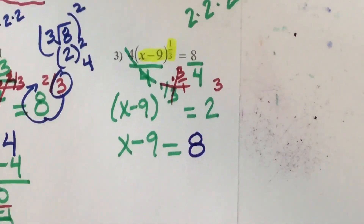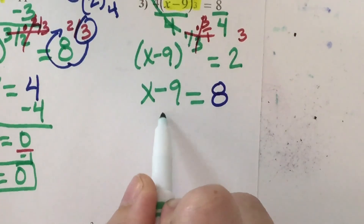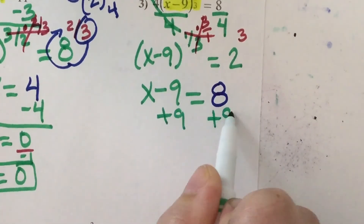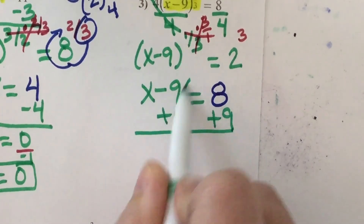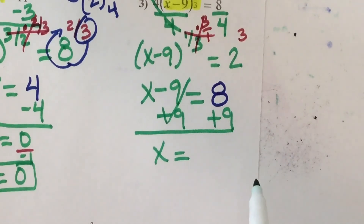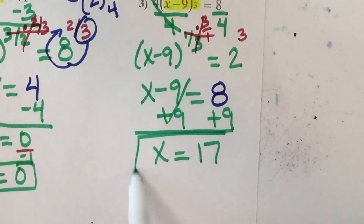To get x by itself, how do you get rid of subtraction of 9? We add it. So I'm going to add 9 to both sides. 8 plus 9 is 17. And that's my answer — I'm done.